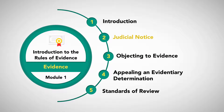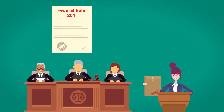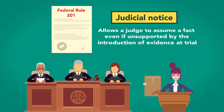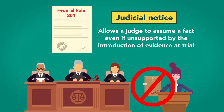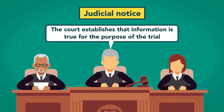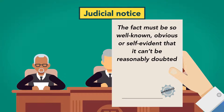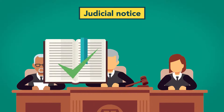Judicial Notice. Not every piece of evidence presented at trial must be supported by formal proof. Under Federal Rule 201, judicial notice allows the judge to assume a fact, even if it is unsupported by the introduction of evidence at trial. By taking judicial notice, the court establishes that information is true for the purpose of the trial. The fact must be so well-known, obvious, or self-evident that it can't reasonably be doubted, or it can be verified by a reliable source that leaves little doubt as to its truth.